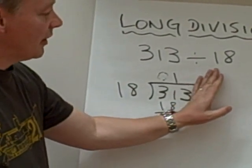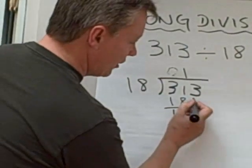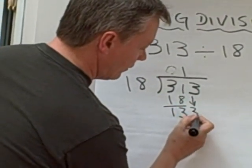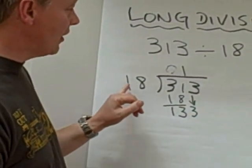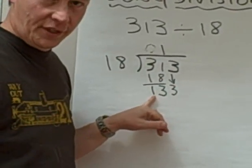So the question now is, I can move on to the units 3. If I drop those units down, I now have a new question, how many times does 18 go into 133?